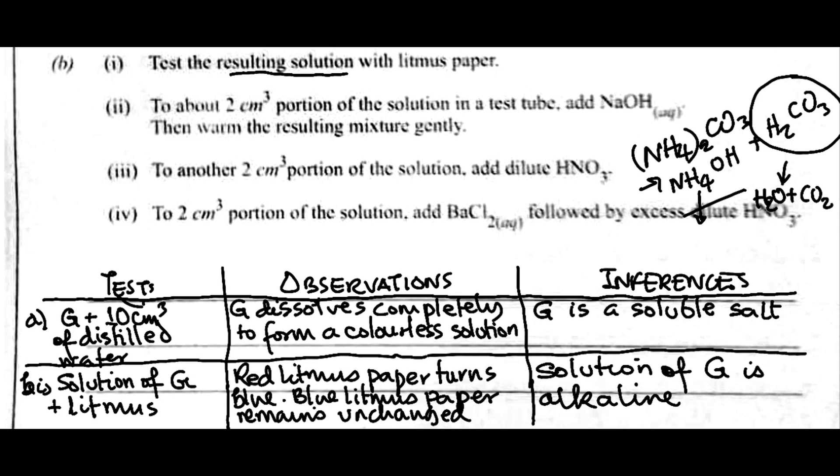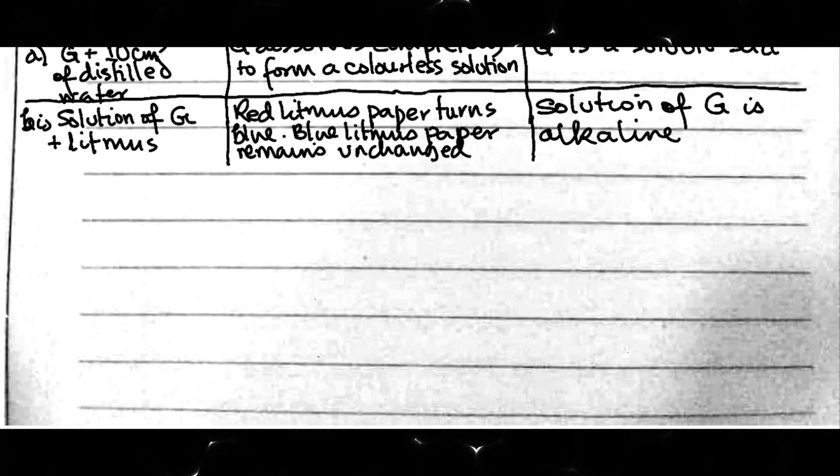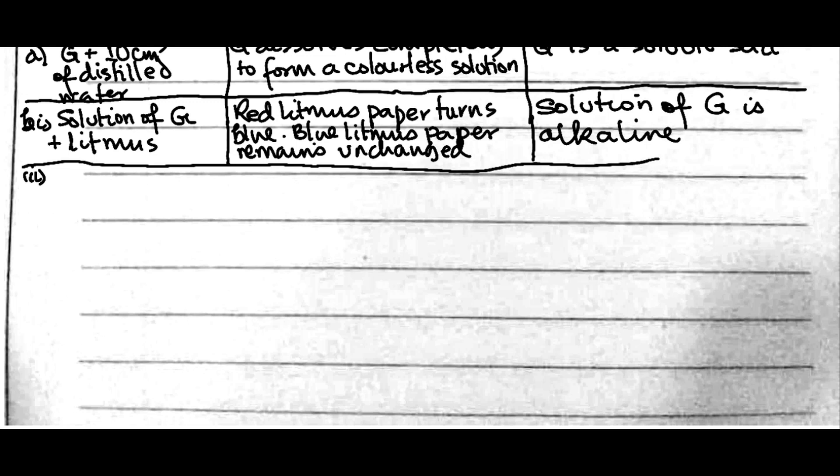So, to about 2 cm³ portion of the solution in the test tube, add sodium hydroxide and then warm. Whenever you're asked to add sodium hydroxide to a colorless solution and then warm, there's every tendency that ammonia gas will be evolved. So, solution of G, solution of G, plus aqueous sodium hydroxide, plus heat. What happens?